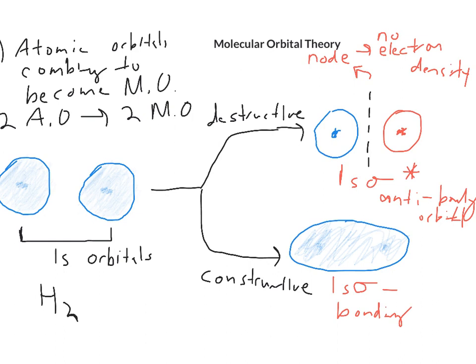They can overlap constructively where there are no nodes, or they can overlap destructively where there is a node, a region where the electrons cannot be, and that's higher energy.